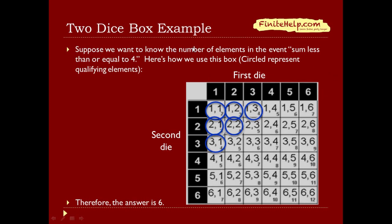Suppose we want to know the number of elements in the event sum less than or equal to 4. Here's how we're going to use this box. Look at the outcome 1 and 1. The sum of the two outcomes is going to be 2, as indicated in the corner here. 2 is less than or equal to 4, so I've circled it here.